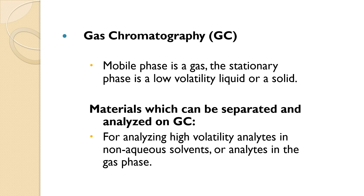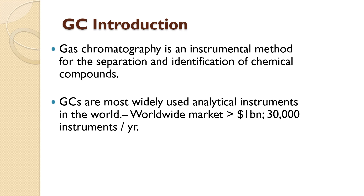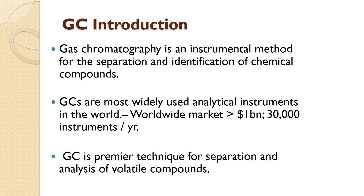In gas chromatography, the mobile phase is gas and the stationary phase can be a low-volatile liquid or solid. Gas chromatography is an instrumental method for the separation and identification of chemical compounds. It is the most widely used analytical instrument worldwide, with a market of more than one billion dollars and 30,000 instruments per year. GC is the premier technique for separation and analysis of volatile compounds.